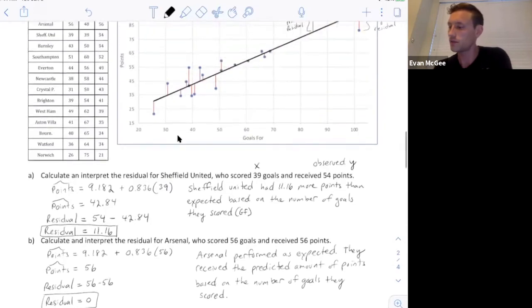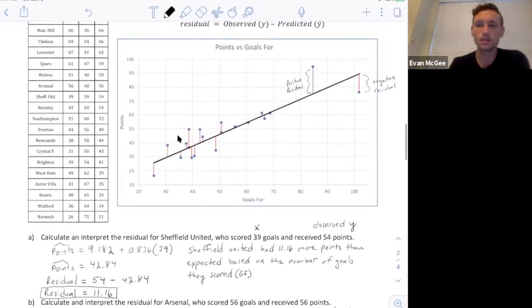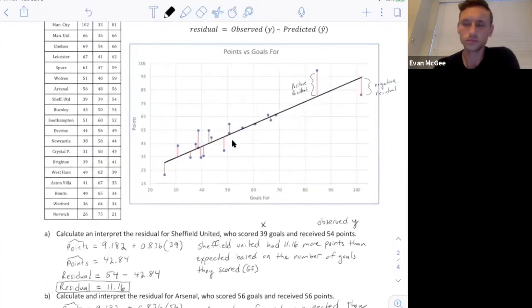If you look at the graph, that means Arsenal is one of these points on the line, 56 and 56. They are this point right here, which is on the predicted line.